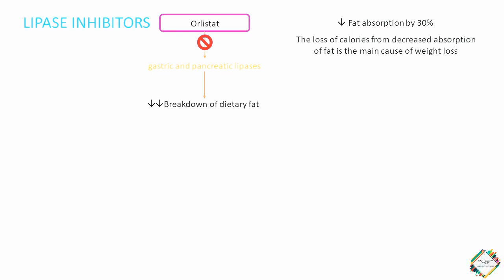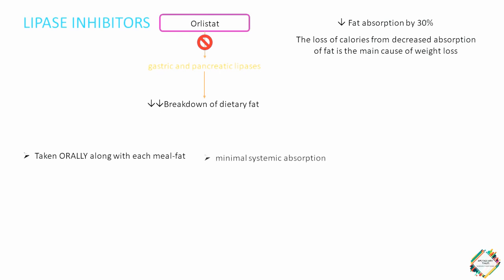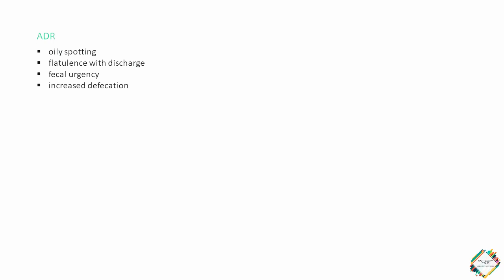Coming to pharmacokinetics, orlistat is administered only with each meal that contains fat. It has minimal systemic absorption and is mainly excreted in the faeces. No dosage adjustments are required in patients with renal or hepatic dysfunction. The most common adverse effects associated with orlistat are gastrointestinal symptoms, which include oily spotting, flatulence with discharge, fecal urgency, and increased defecation. All of these effects can be minimized through a low-fat diet and the use of concomitant cholestyramine.